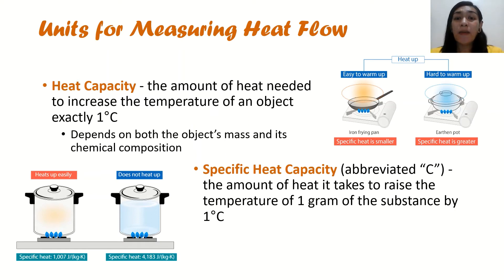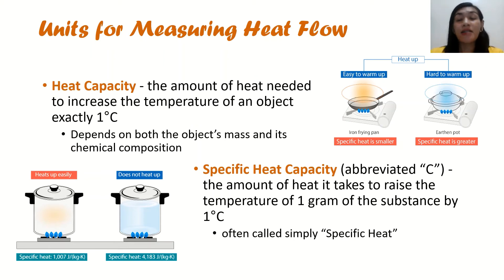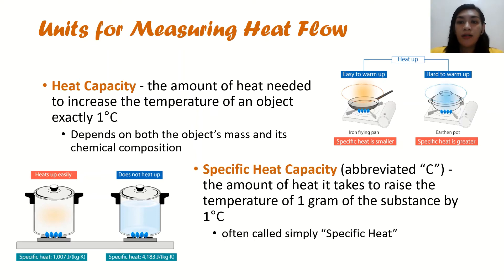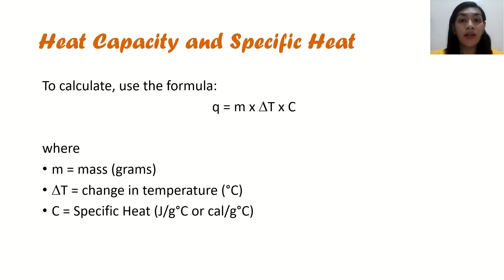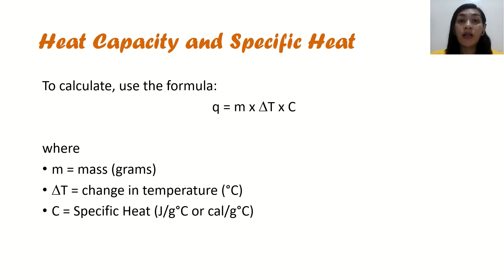Specific heat capacity is also called specific heat — if you see in other references that only "specific heat" is used, that is the same as specific heat capacity. We use the symbol capital C, and it refers to the amount of heat it takes to raise the temperature of 1 gram of that substance by 1 degree Celsius. To measure heat flow, we use the formula Q = m × ΔT × C, where m is the mass in grams, ΔT is the change in temperature in degrees Celsius, and C is the specific heat in joules per gram degree Celsius, or calories per gram degree Celsius.